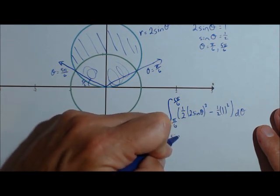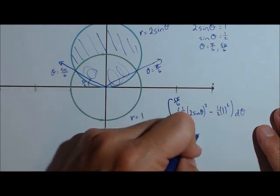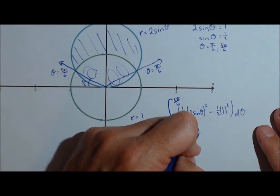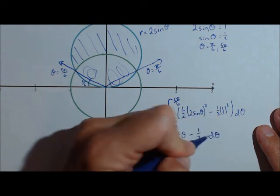And sine squared theta minus 1 half times 1, which is just a half, d theta.